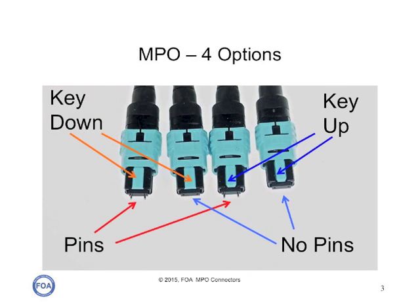MPO connectors have four options. They have alignment pins, and some of the connectors will have pins, and some of them will have no pins, or holes, so that they can mate to a connector with pins. In addition, each connector has a key, and the key may be up or down. So there are actually four combinations of pins, no pins, key up, and key down in the way they can align.